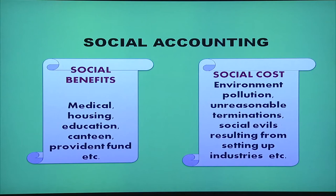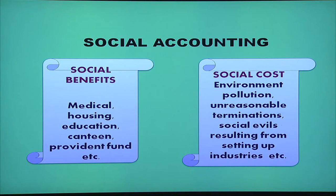In social accounting, social benefits and social costs are ascertained. Social benefits include medical benefits, housing benefits given to employees, educational benefits, canteen facility, provident fund, etc. Social costs include environmental pollution, unreasonable termination, and social evils resulting from setting up industries. Now let us move to the objectives of financial accounting. Financial accounting is done to find out various balances — cash balances, purchase balances, sales balances, etc.